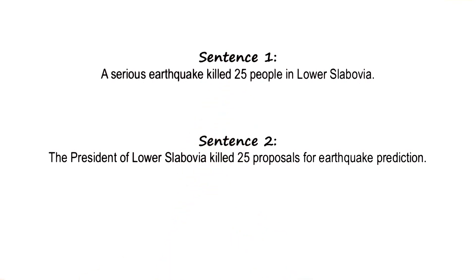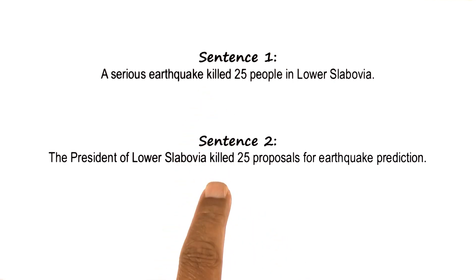How can we build an AI program that can do the same thing? We will see that the AI program will need to use a lot of background knowledge in order to be able to do that. And that will generate hypotheses about how humans might be using that background knowledge to similarly disambiguate between different senses of the word kill.